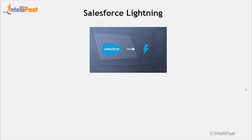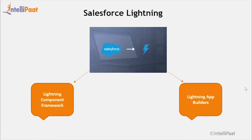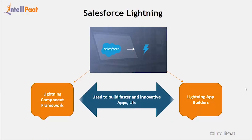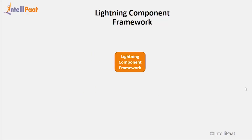Let's understand what Salesforce Lightning is. Salesforce Lightning is an ecosystem of ready-made apps and components which enterprises can use to build next-generation user interfaces and apps. It basically consists of two components: first is the Lightning Component Framework, and then we have Lightning App Builder. Using both of these, innovative apps and UIs — user interfaces — are built. So Lightning is nothing but a framework used to build applications and user interfaces.